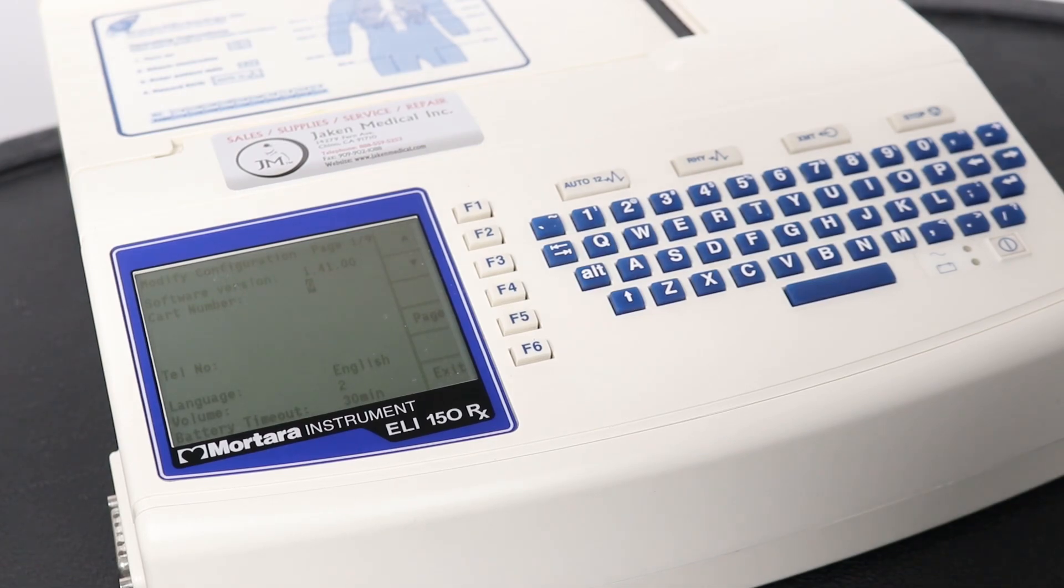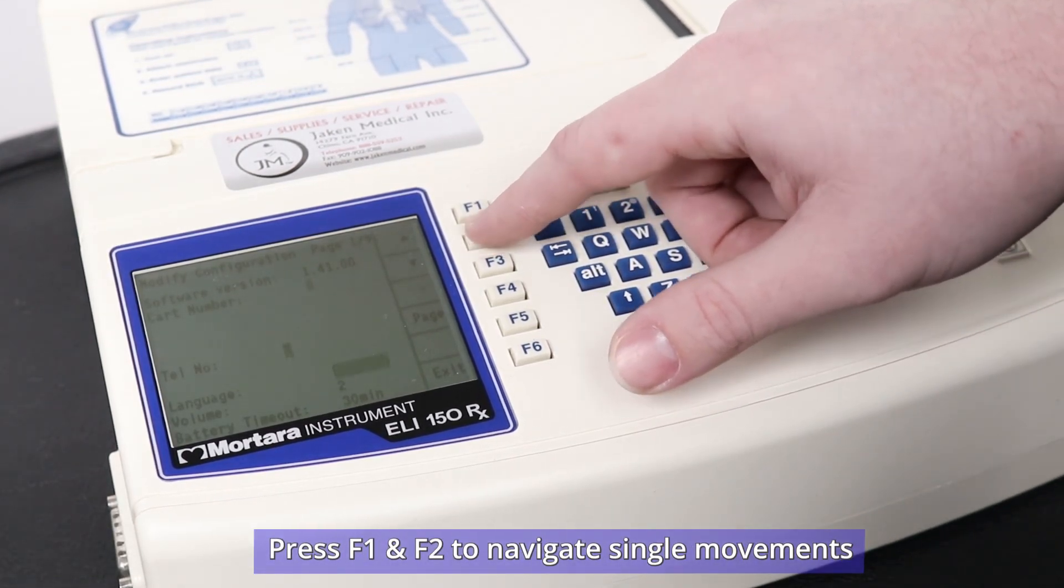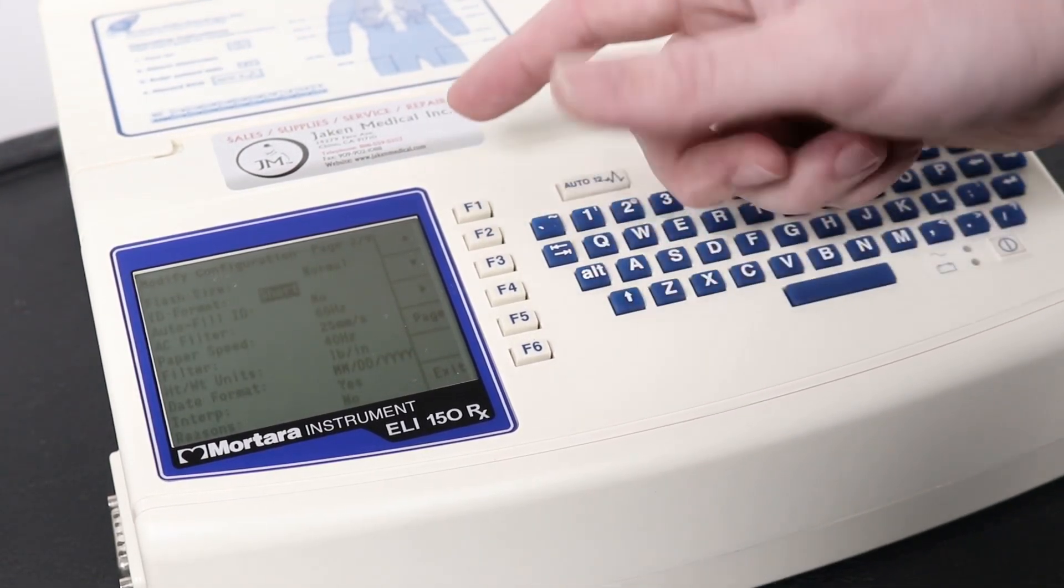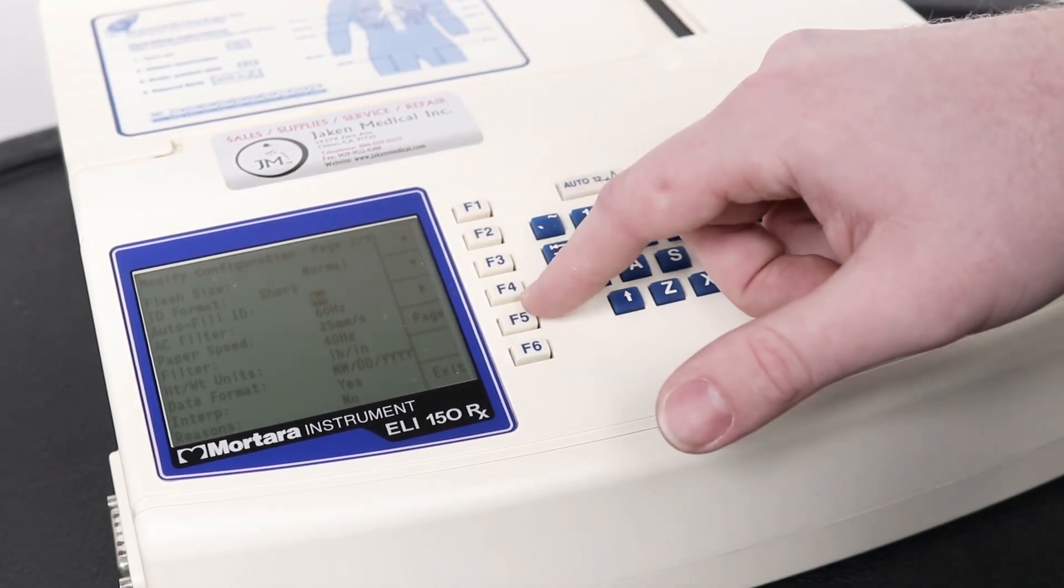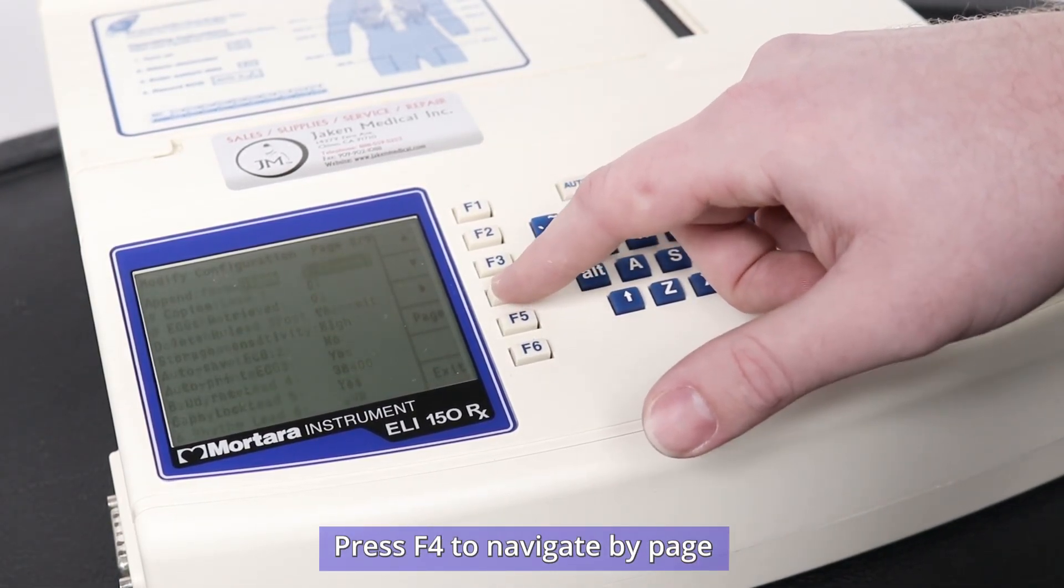Once in the service menu, there are multiple areas that you can customize to fit your needs. To navigate, use F1 and F2 for single movements, or you can use F4 for page to go through the page quickly.